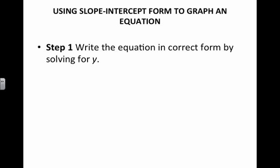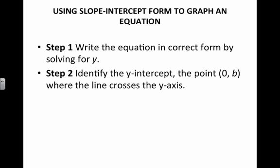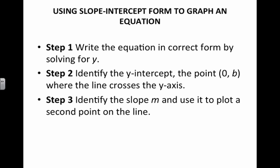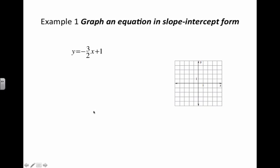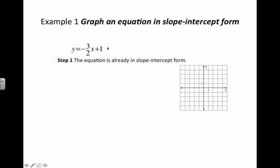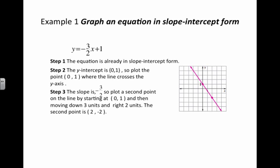We're going to use slope-intercept form to graph an equation. First, write the equation in correct form by solving for y, then identify the y-intercept — the point 0, b where the line crosses the y-axis. That's why it's called slope-intercept form; you can find the y-intercept just by looking at the equation. In our example, y equals mx plus b, so m is negative 3 halves and b is 1. The equation is already in slope-intercept form, and the y-intercept is 0, 1, so we plot the point 0, 1.